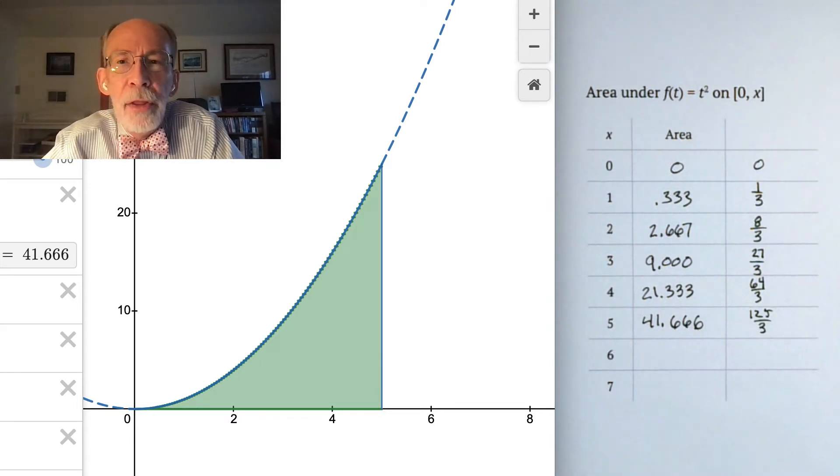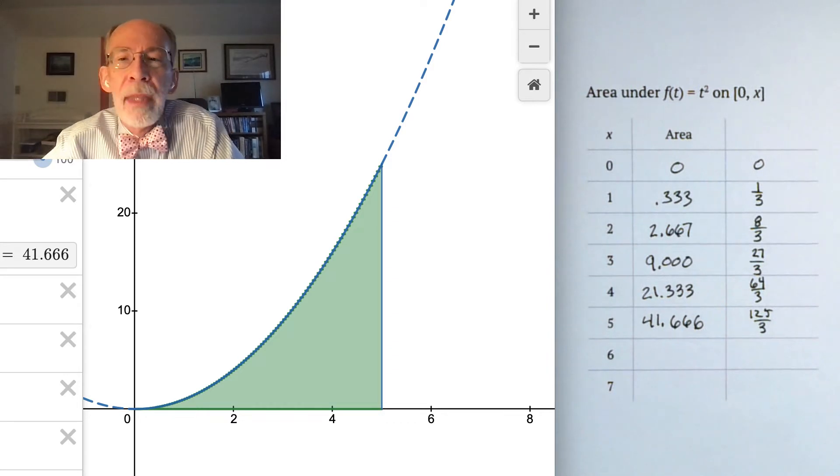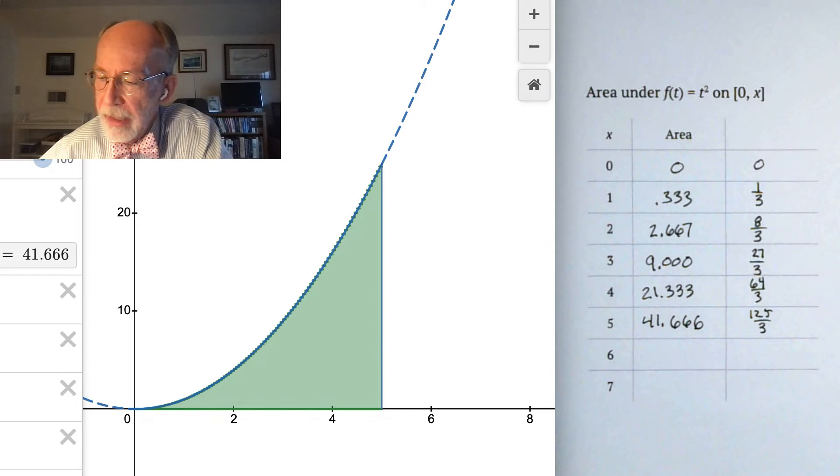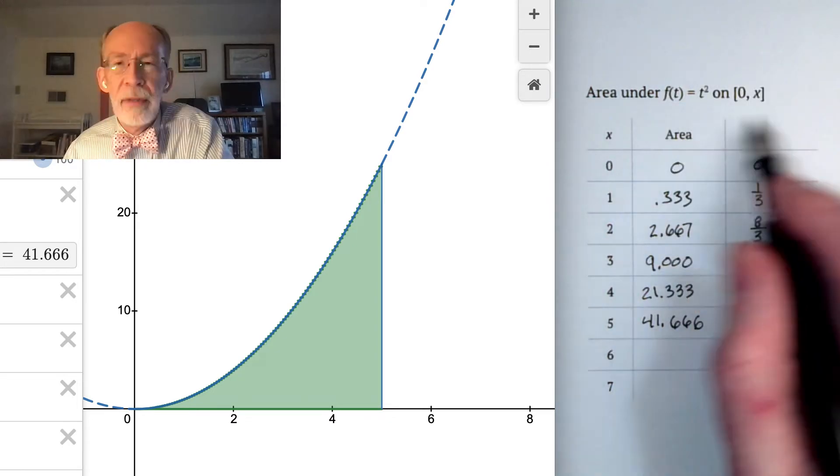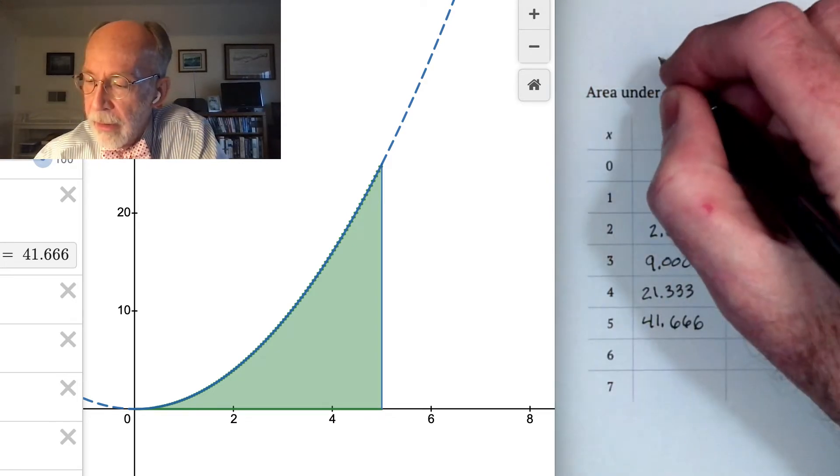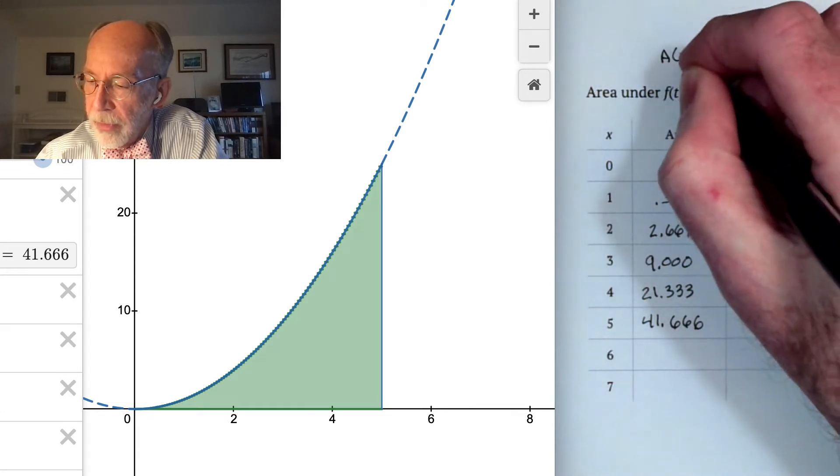And if you look at those numerators, you find that they seem to be the cubes of the x's. Seems to be the case that the area that we've defined here in this fashion is x cubed over 3.